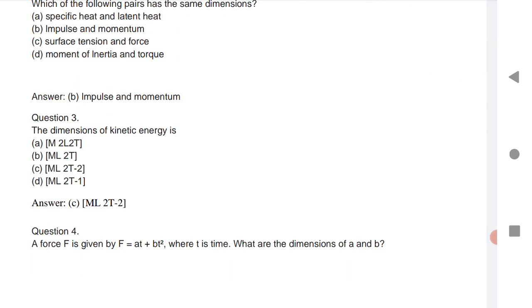The dimension of kinetic energy. The option is C. ML square T power minus 2 is a dimension of kinetic energy.